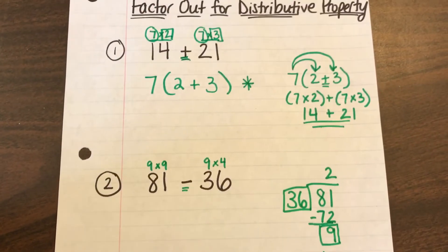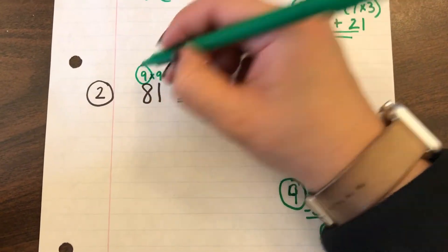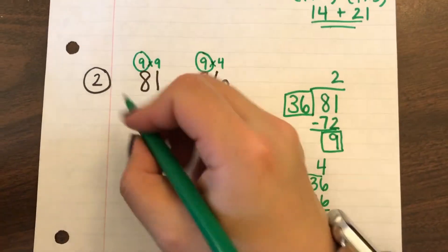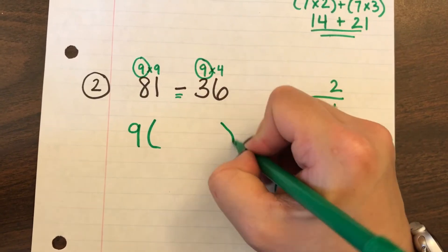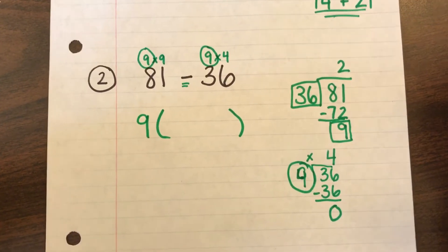So just like we did above I'm going to figure out what number is the same between the two. So I know the 9 is the same. And that number is going to stay outside of my parenthesis house because that 9 is the one that said hi to the other two numbers that were inside the parenthesis house.